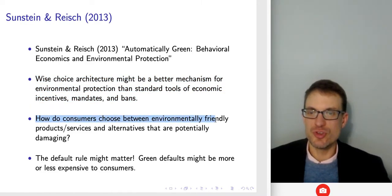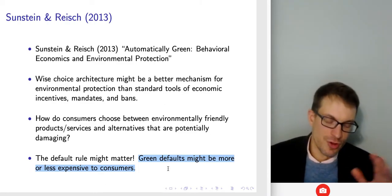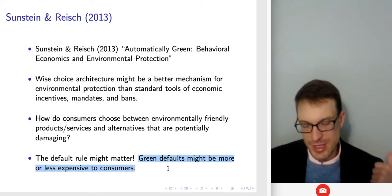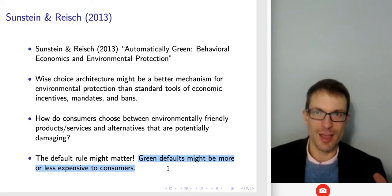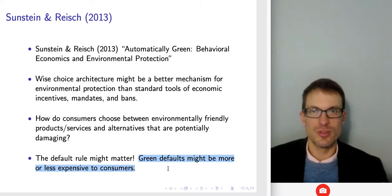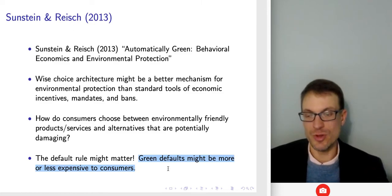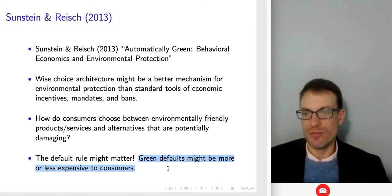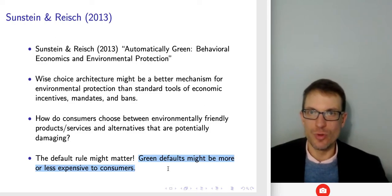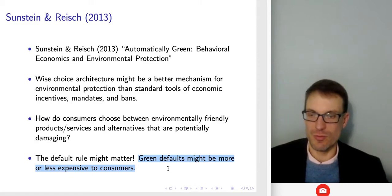How do consumers choose between environmentally friendly products and alternatives that are potentially damaging? The default rule might matter. We see from the nudge literature that whatever is the status quo tends to persist — people tend not to opt out of whatever they're enrolled in. So the default rule — whatever happens if you make no choice — really might matter.